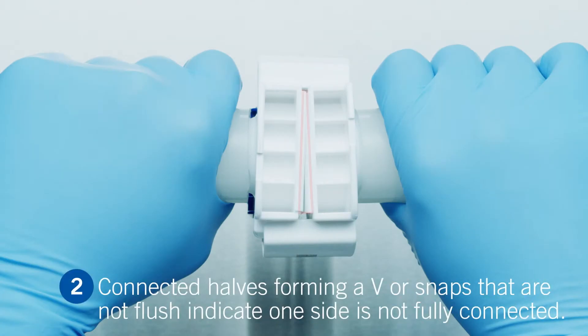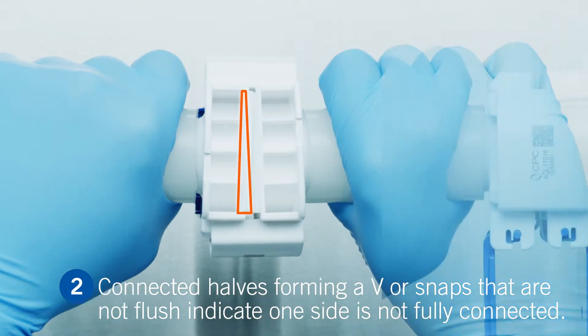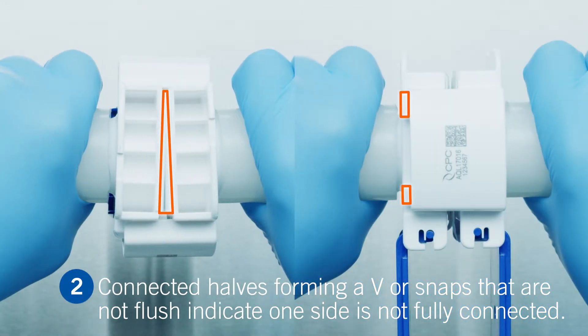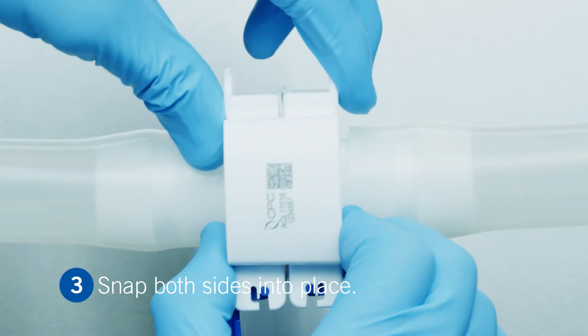If you can see the connector halves forming a V, or that the snaps are not flush with the back side of the connector, this means both sides are not fully connected. Just snap both sides so they are parallel.